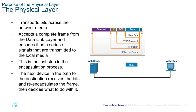The physical layer is responsible for transporting bits across the network media. It accepts a complete frame from the data link layer and encodes it as a series of signals that are transmitted to the local media. This is the last step in the encapsulation process. The next device in the path to the destination receives the bits, re-encapsulates the frame, and then decodes it to determine what to do with it. Remember, the physical layer is part of the OSI model — we are just focusing on that physical layer component.